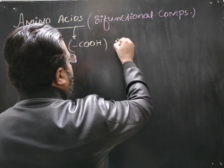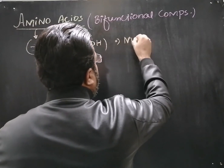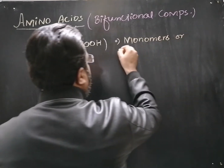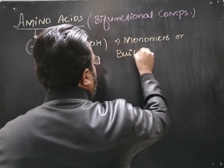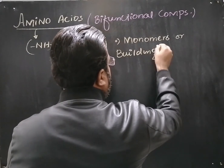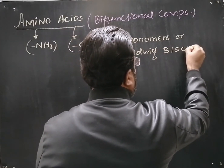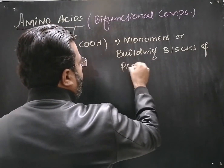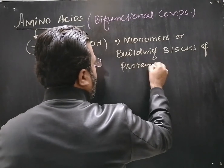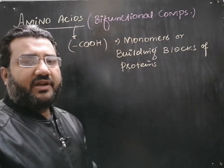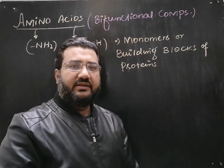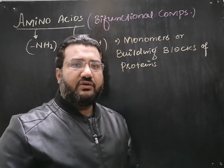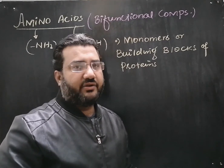Amino acids are the monomers or building blocks of proteins. When a large number of amino acids join together, a macromolecule is produced which is called a protein. So, the monomers of protein are the amino acids.